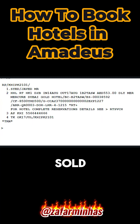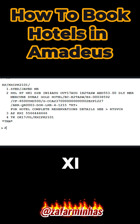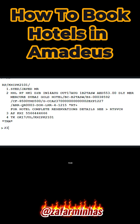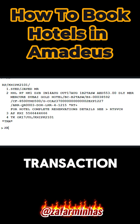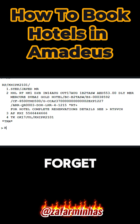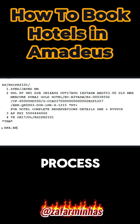Once the hotel is sold, avoid using the IG, IR, or XI transactions. If you need to cancel within the cancellation policy time frame, use the XE transaction followed by 2 for the line number corresponding to the hotel segment. Don't forget to save the changes to complete the hotel booking process.